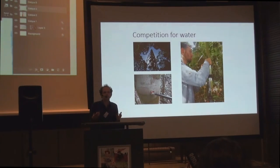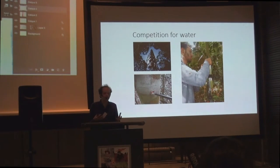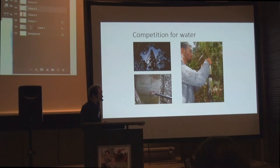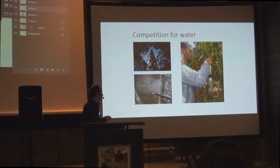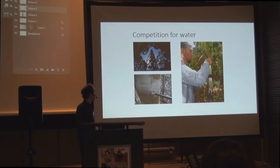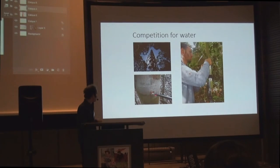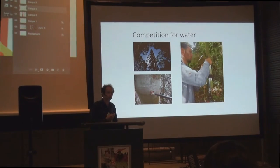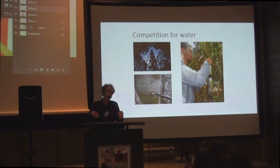Another hypothesis for why lianas are proliferating is that they could have an advantage in a changing hydrological cycle — with climate change the tropics become drier, and this might give lianas an advantage over trees. That's why we are measuring the sap flow with sensors that measure how much water is flowing through the stems of lianas. We do the same for trees and monitor their water use. We are also analyzing the water in the stems of the trees and lianas, because the composition of the stem water tells you where in the soil these plants are getting their water.